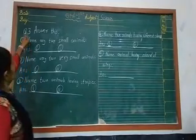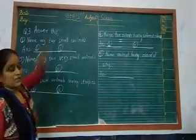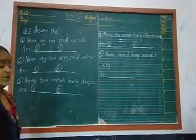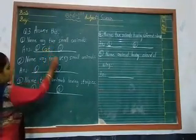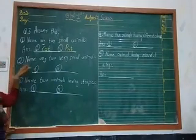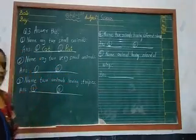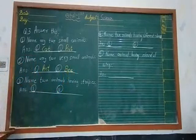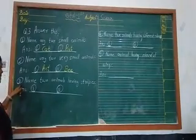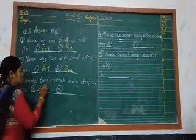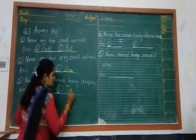Now, question number 3: name any two small animals. As we know, cat and rabbit are small in size. Question number: name any two very small animals — honeybee and mosquito; they are called insects also. Question number 3: name two animals having strips. Those animals having strips are zebra and tiger.